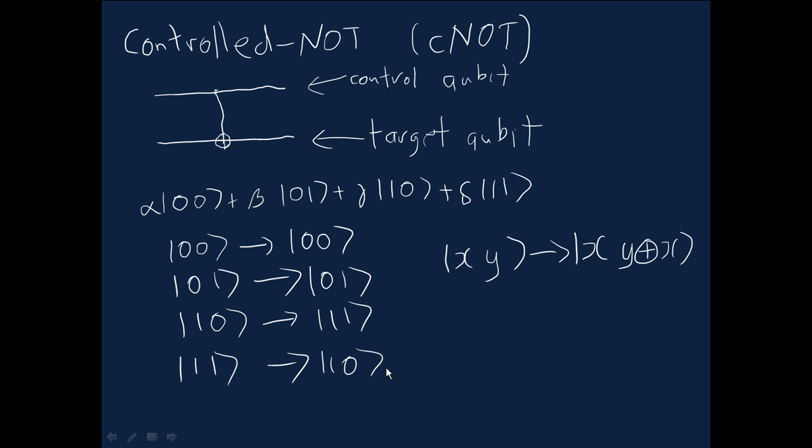Okay, and that's all there is to the controlled-not gate. It's a very simple gate. These actions are applied linearly to superpositions, as per usual. It's really quite a simple idea. Let's just write out a matrix representation for it, an explicit matrix representation.